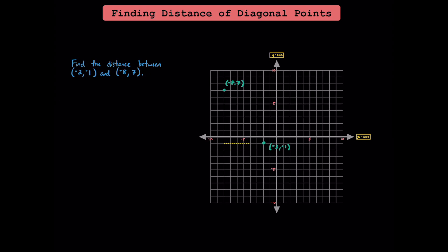This segment right here represents how far these points are from each other horizontally, and this segment right over here represents their distance from each other vertically. This horizontal distance is going to be 6 units, while our vertical distance is 8 units.